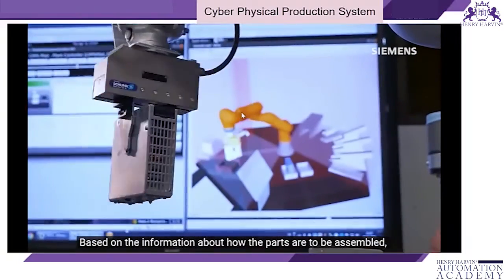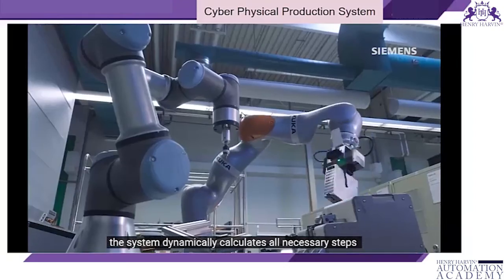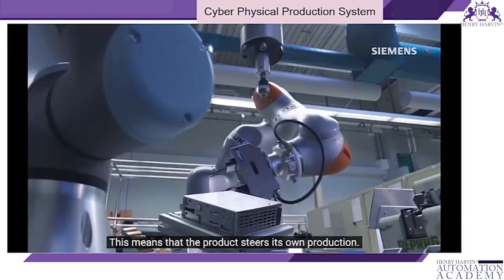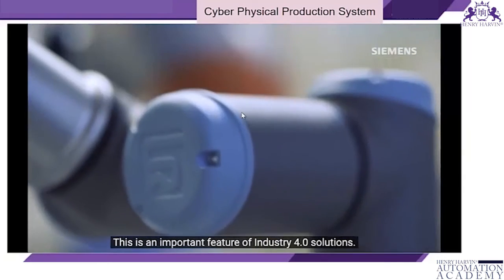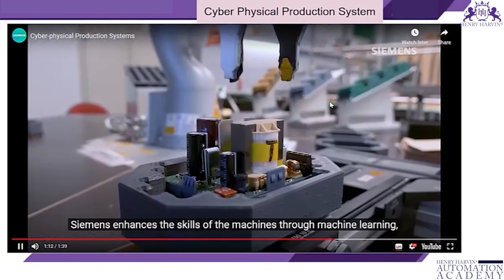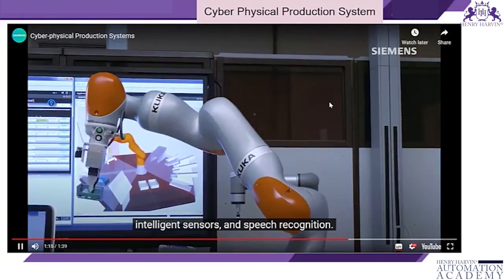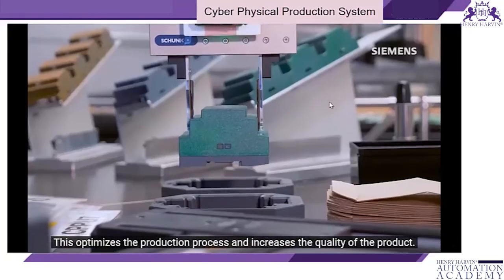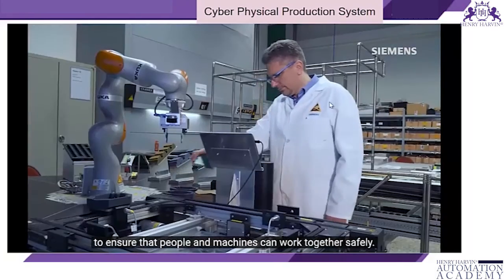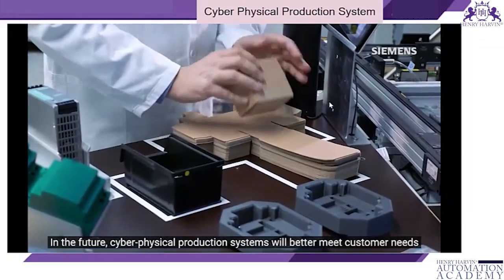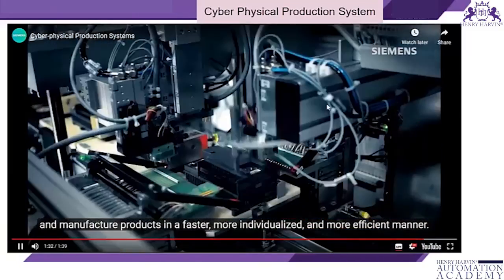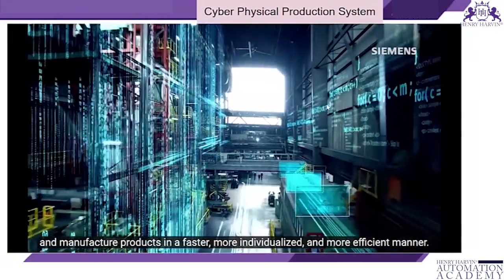Based on assembly information, the system dynamically calculates all necessary steps and carries out production autonomously — the product effectively steers its own production, which is an important feature of Industry 4.0 solutions. Siemens enhances machine capabilities through machine learning, intelligent sensors, and speech recognition to optimize the production process and increase product quality. Safety requirements are also developed to ensure people and machines can work together safely. In the future, cyber physical production systems will better meet customer needs and manufacture products faster, more individualized, and more efficiently.